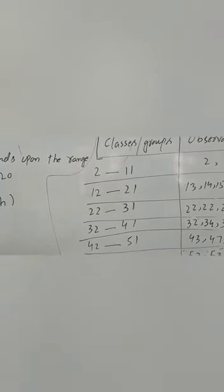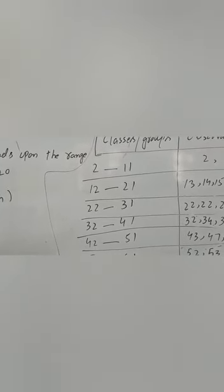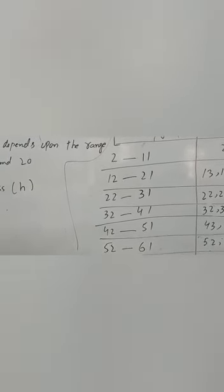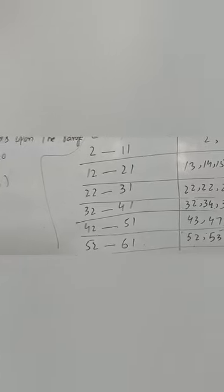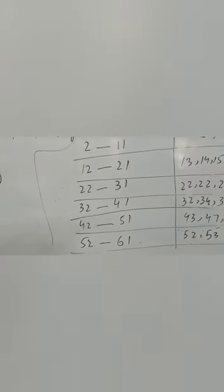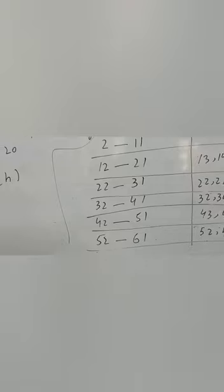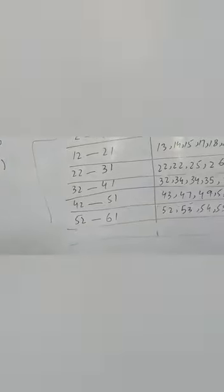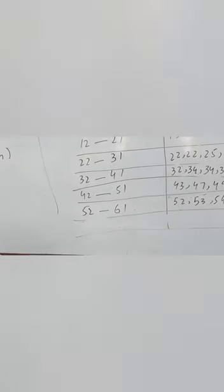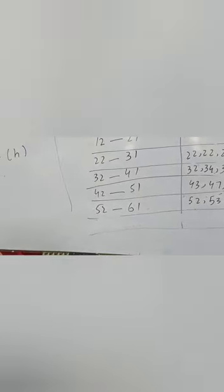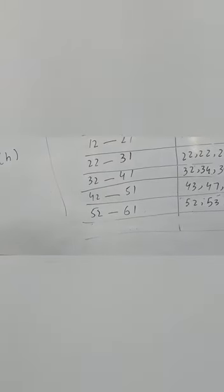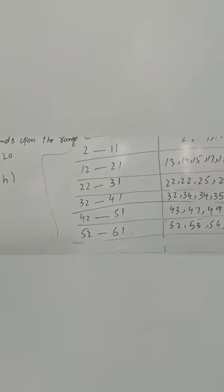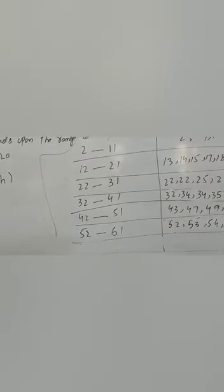The first class is 2 to 11. The second class starts at 12 and goes to 21. Then 22 to 31, then 32 to 41, then 42 to 51, and finally 52 to 61, since the maximum value is 60. Whether a boundary number appears in the data or not, we always create the groups in sequence to cover all values.